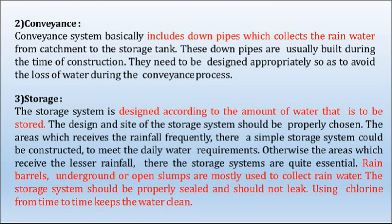The third and last stage is storage. The storage system is designed according to the total amount of water to be stored, and its design and site should be properly chosen. In areas that receive rainfall frequently, a simple storage system can be constructed to meet daily water requirements. In areas receiving lesser rainfall, the storage system is quite essential. Rain barrels, underground or open cisterns, are mostly used to collect rainwater. The storage system should be properly sealed, not leak, and chlorine should be used from time to time to keep the water clean and free from pathogens.